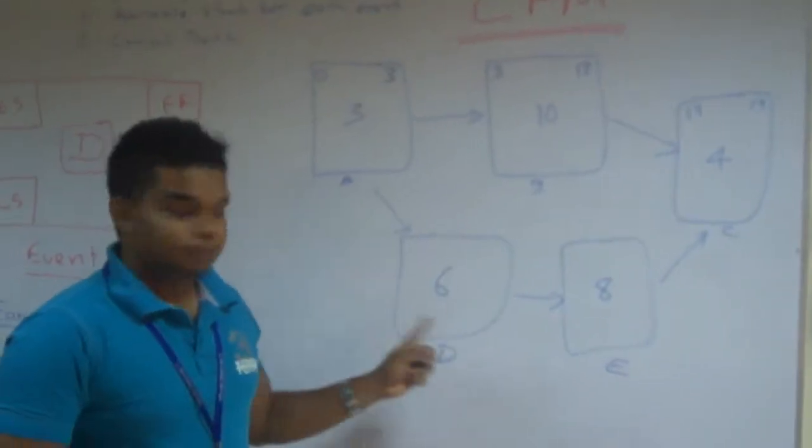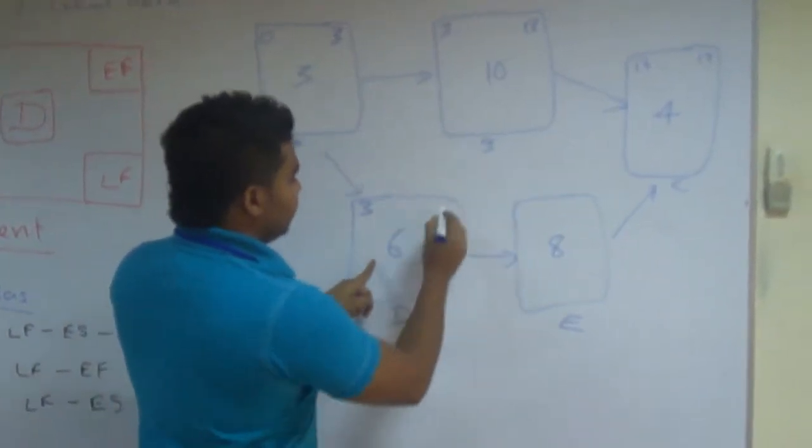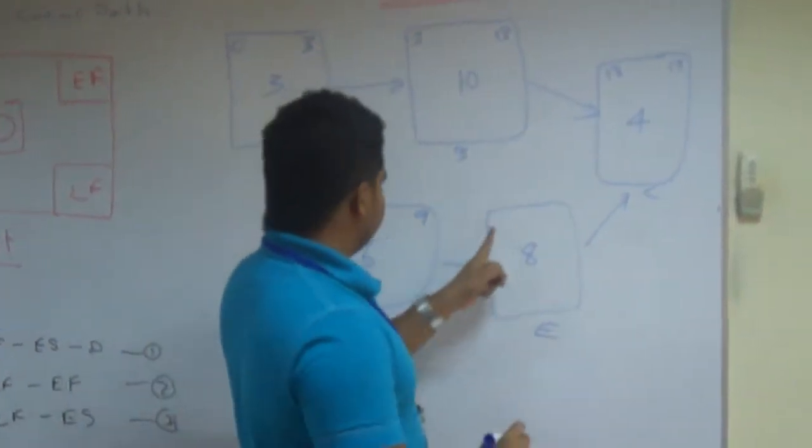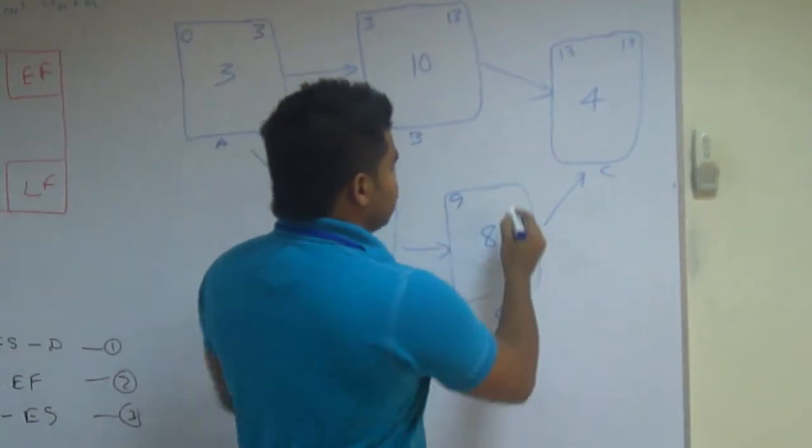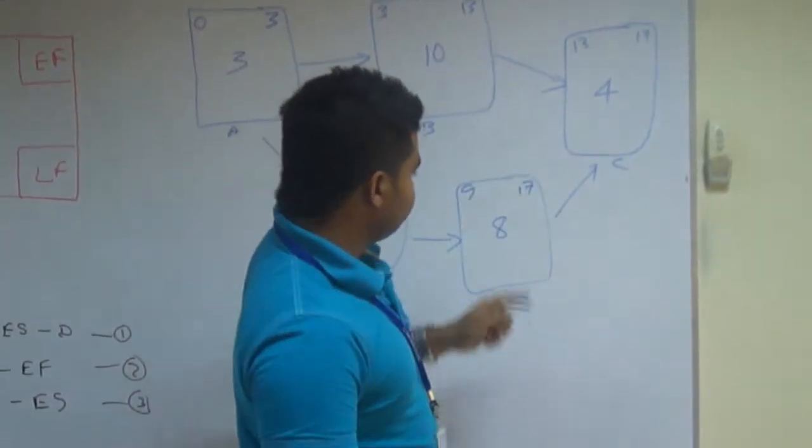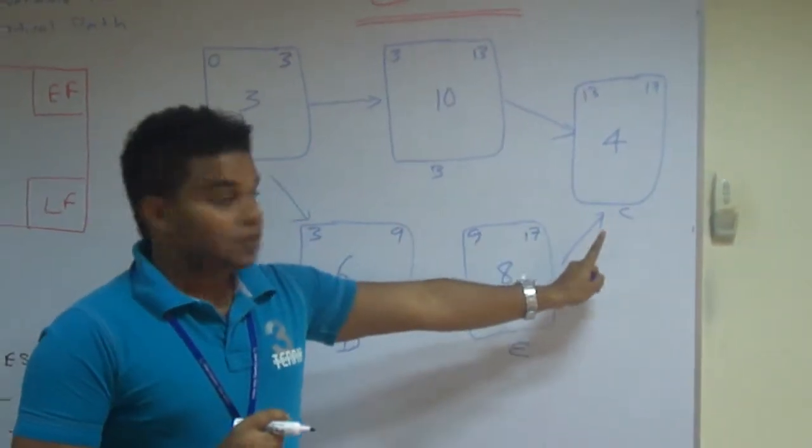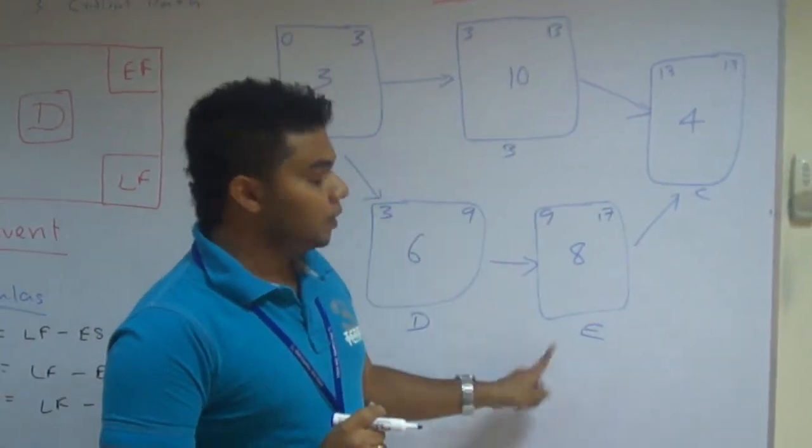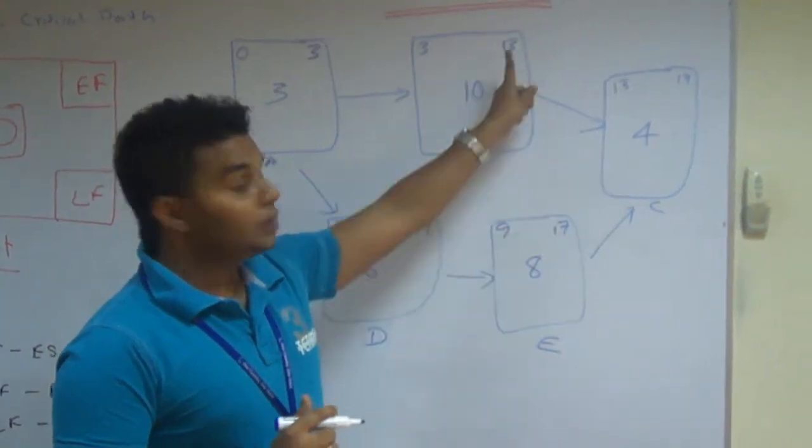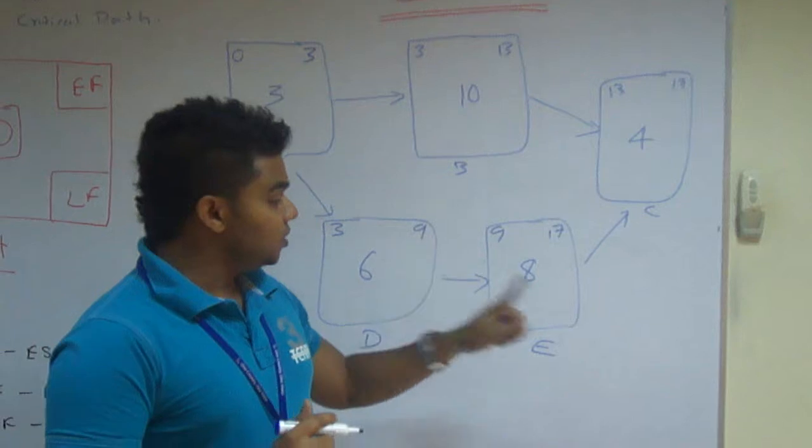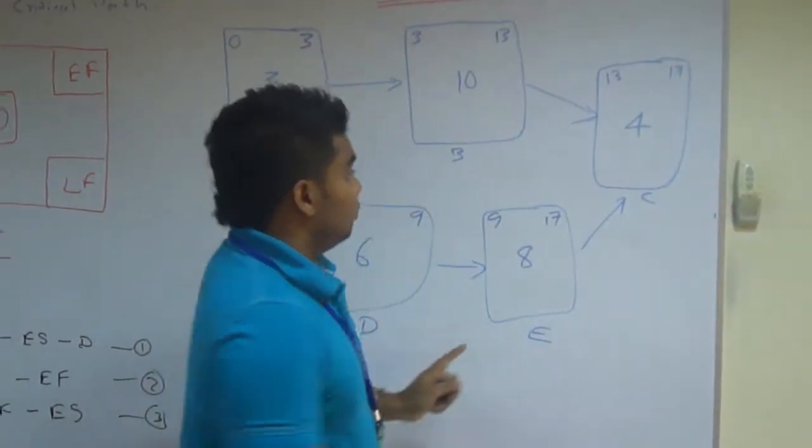So what about this part? Same for here. We start here. We will finish it at nine. We will start it at nine. We will finish it at seventeen. From here, we see that before starting event C, we have to complete event B and E. Seems like event E takes much longer time than event B. So this is the determining event before starting event C.